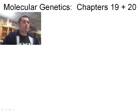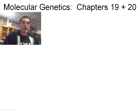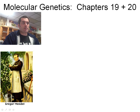Hi, this is the molecular genetics review or summary for AP Biology. This will cover chapters 19 and 20. You're expected to read chapters 16 through 18 still. This is going to focus mainly on the molecular genetics, but I wanted to show how we got here. So far we've already talked about Mendelian genetics, which is just the basic ABCs of genetics.